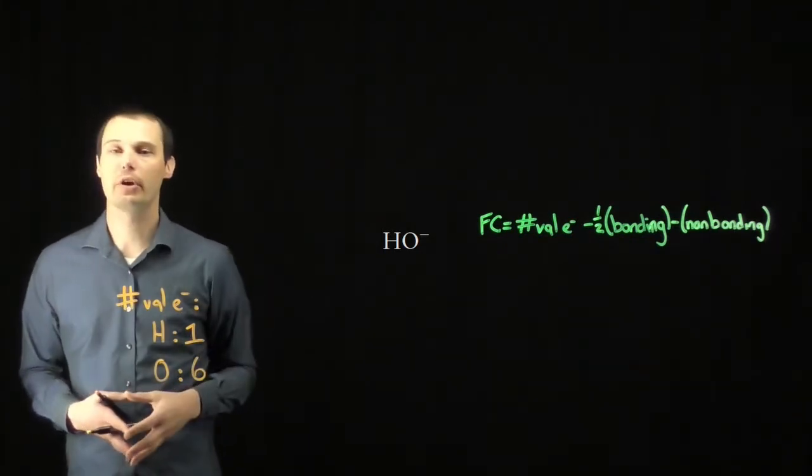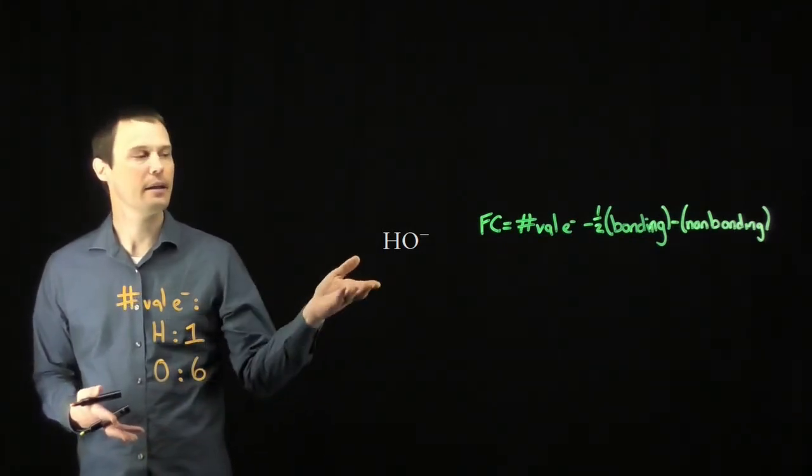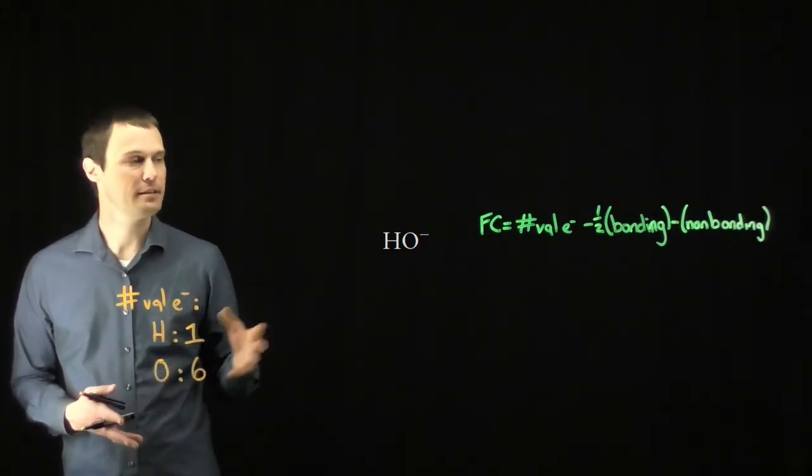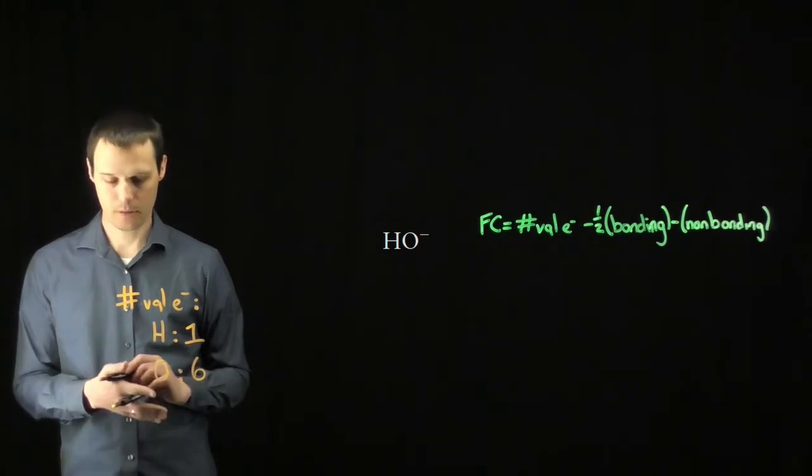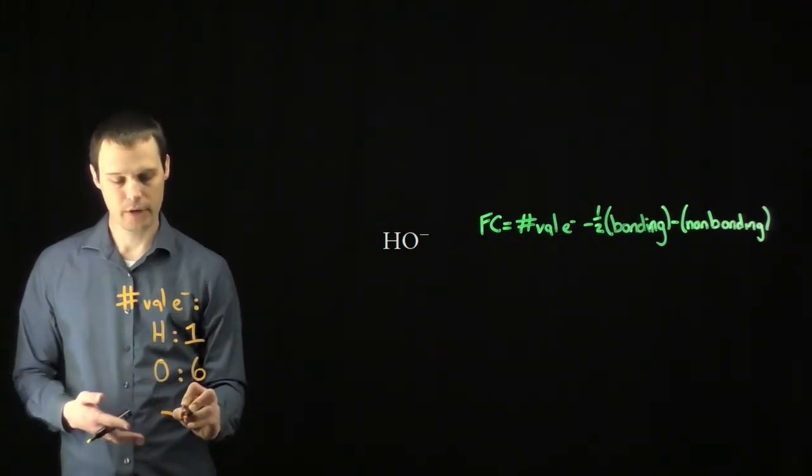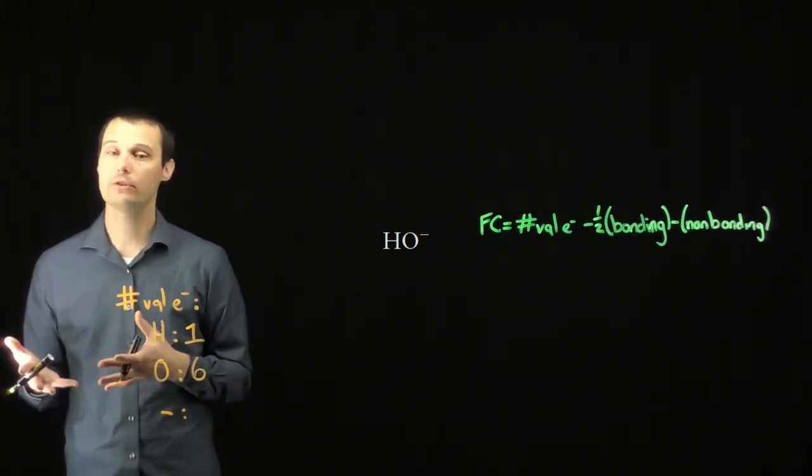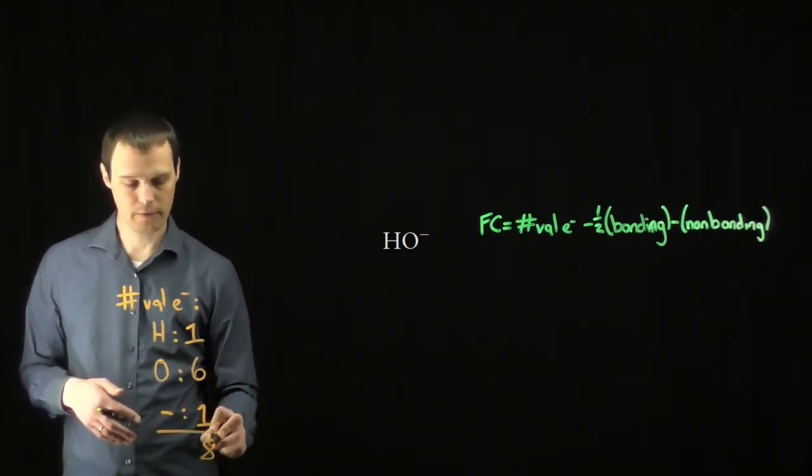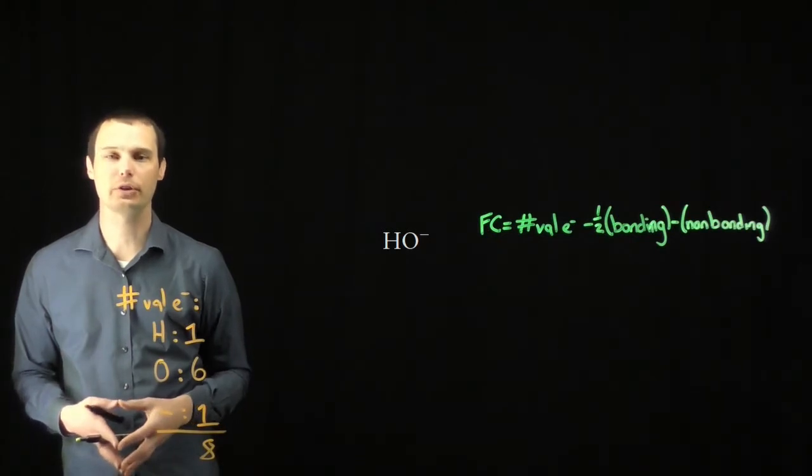The structure we're trying to draw the Lewis structure for is the hydroxide ion, HO-. The hydrogen has one valence electron, and the oxygen has six valence electrons. The other thing we need to consider is the negative charge. The negative charge adds one more electron to our structure. That gives us a total of eight electrons that we need to add to this structure.